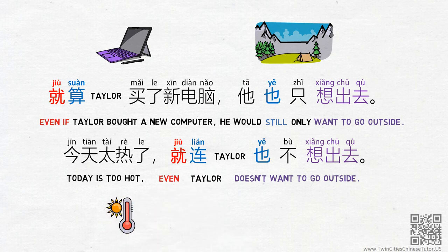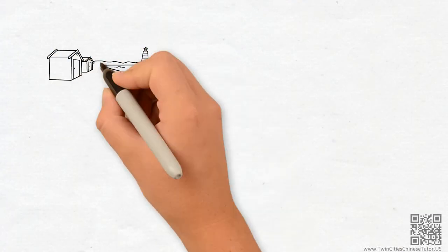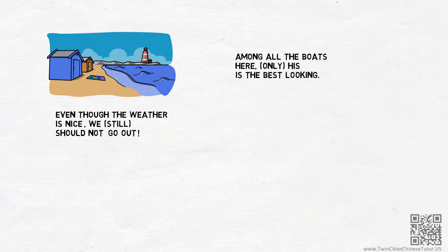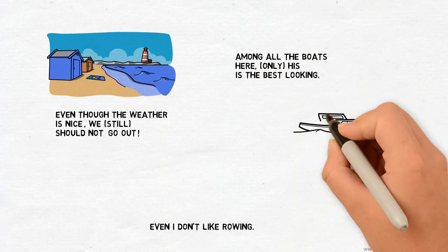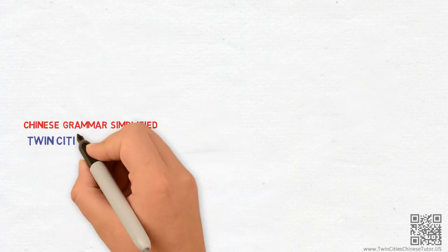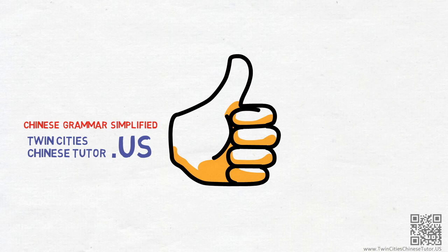That's all for today. In the next video, we will look at jiu as a preposition — some of my students who lived in China are still confused about that one. I'm looking forward to sharing it with you. As always, to help you practice, please take a look at the following English sentences and think about how you would say them in Chinese. You can find the answers on my website. If you have any questions about any Chinese grammar point that confuses you, please leave a comment below. For customized Chinese lessons, please reach me at TwinCitiesChineseTutor.us. Thank you for watching — see you soon!